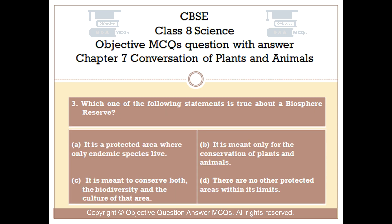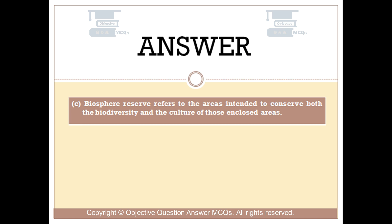Question number 3. Which one of the following statements is true about a biosphere reserve? Option A, it is a protected area where only endemic species live. Option B, it is meant only for the conservation of plants and animals. Option C, it is meant to conserve both the biodiversity and the culture of that area. Option D, there are no other protected areas within its limits. The right answer is option C. Biosphere reserve refers to the areas intended to conserve both the biodiversity and the culture of those enclosed areas.